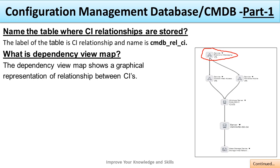What is the name of the table where CI relationships are stored? The relationship table is CMDB_REL_CI, where all CI relationships are stored.